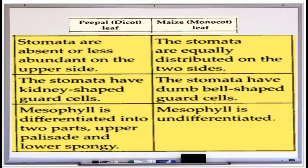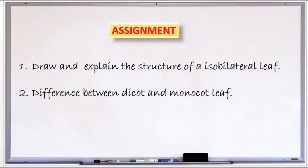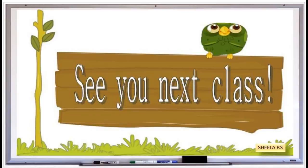For your assignment: draw and explain the structure of an isobilateral leaf, that is a monocot leaf. The second homework is to write the differences between a dicot and a monocot leaf. Thank you, see you in the next class.